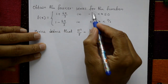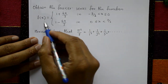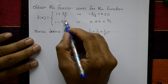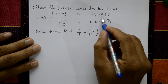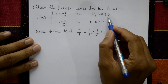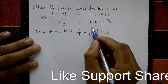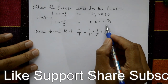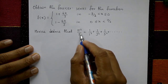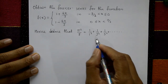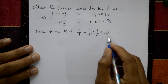Obtain the Fourier series for the function f(x) = 1 + 4x/3 in the interval -3/2 < x ≤ 0, and f(x) = 1 - 4x/3 in 0 ≤ x < 3/2. Hence deduce that π²/8 = 1/1² + 1/3² + 1/5² + so on.